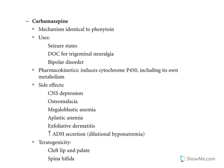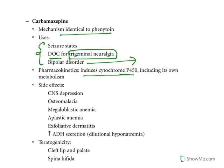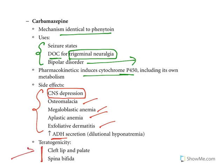Carbamazepine is also a sodium channel blocker. It is used to treat seizures and is the drug of choice to treat trigeminal neuralgia. It can also be used to treat bipolar disorder and depression. It also induces cytochrome P450. Major adverse effects include CNS depression, osteomalacia, anemia, aplastic anemia, dermatitis, and increased antidiuretic hormone secretion. Carbamazepine too causes teratogenicity — cleft lip and palate, and spina bifida.